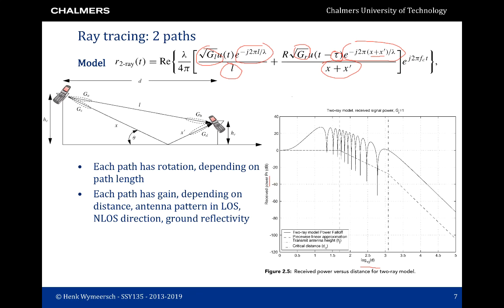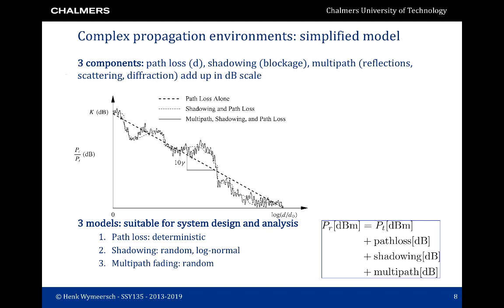When we go on to more complex propagation environments, ray tracing becomes no longer tractable, so we look to more simplified models. If we were to visualize the received power as a function of distance for a series of experiments, we would see a figure where the x-axis shows the logarithm of distance with respect to some normalization distance d0 and the y-axis shows received power relative to transmit power. We would see three different effects: roughly the power goes down with distance — this we call path loss.